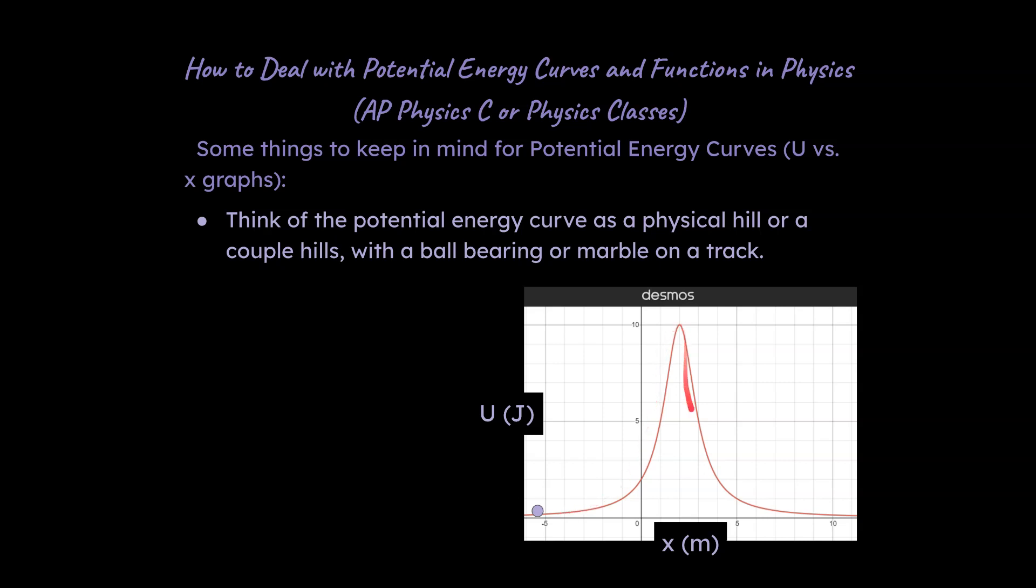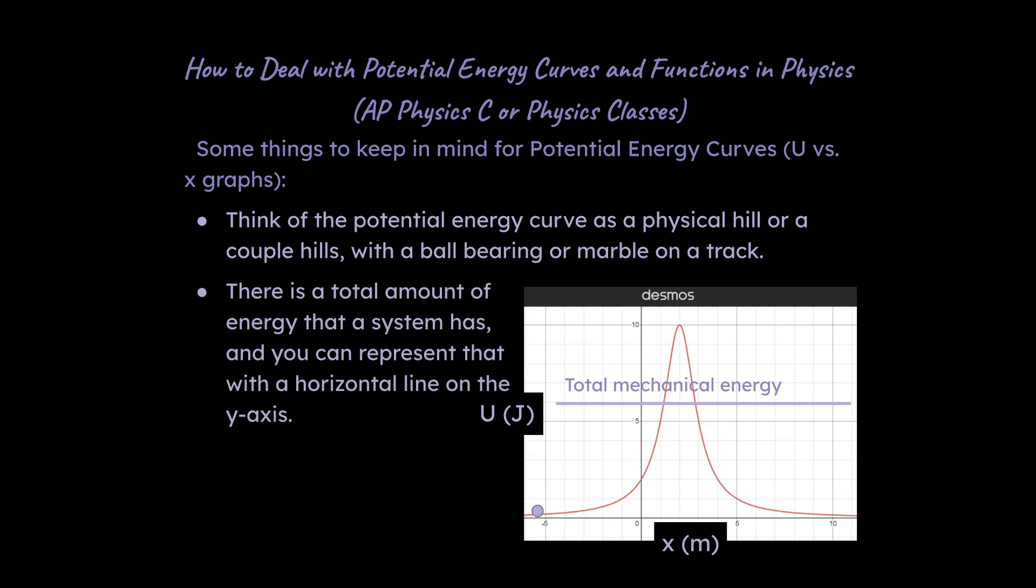First of all, these functions that you have with potential energy in respect to position are potential energy curves. It's a plotted function as a graph, and the first thing to think about is to think about them almost like this is a physical track, like a plot of a physical track that some marble or something would be going on, a track that would be going up and down, or maybe there are multiple hills or a more complex shape. It will help if you can think of them as a physical hill or physical track that an object travels through.